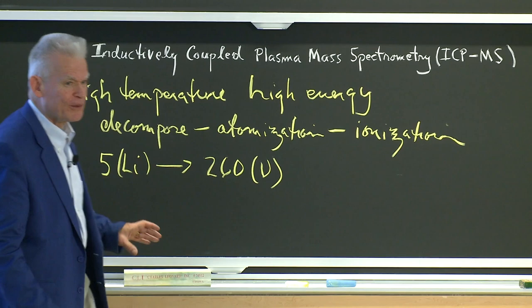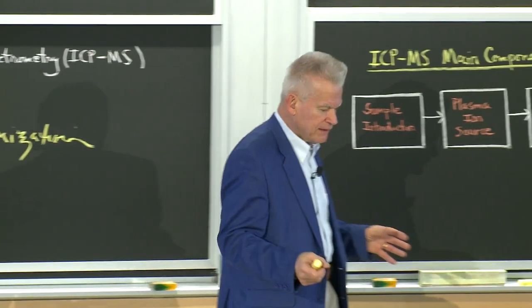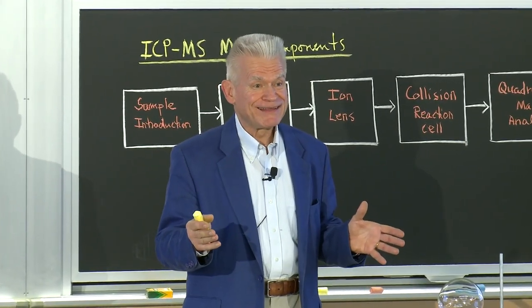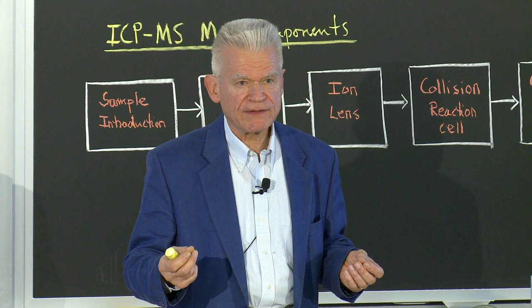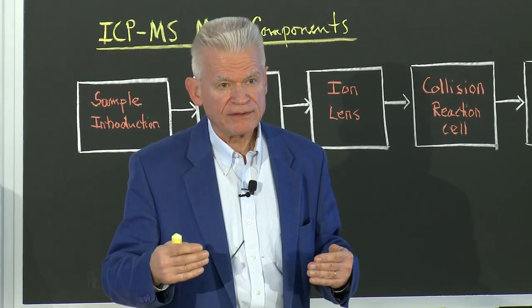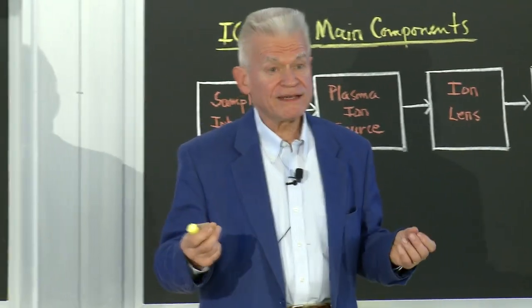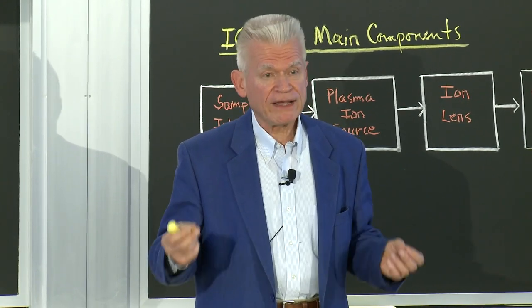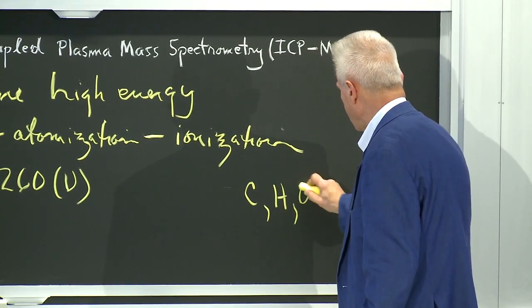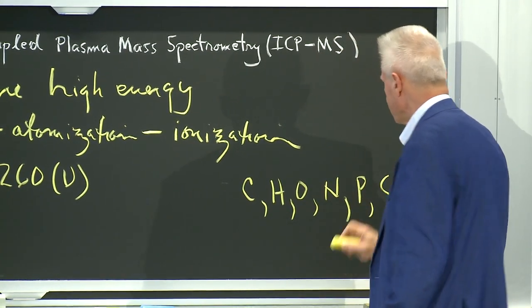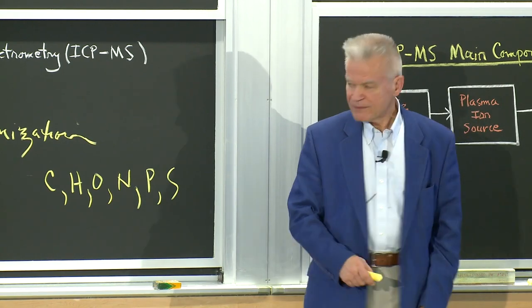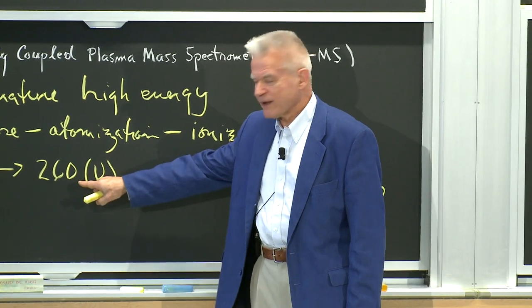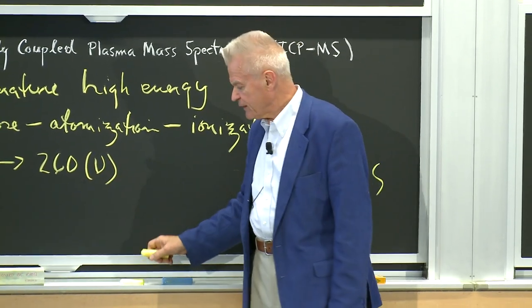This machine scans from mass 5 — lithium — up to 260, which is uranium. That's another big difference between this and other forms of mass spectrometry. Because the other forms have molecular weights in the hundreds of thousands for nucleic acids, carbohydrates, and proteins. Regular mass spec, which is much lower energy and ionization, looks for molecular weight information about biomolecules and fragmentation. So we're primarily concerned about carbon, hydrogen, oxygen, nitrogen, phosphorus, and sulfur. With ICP-MS, we're rapidly scanning the whole range of all elements, with a top mass range of 260.